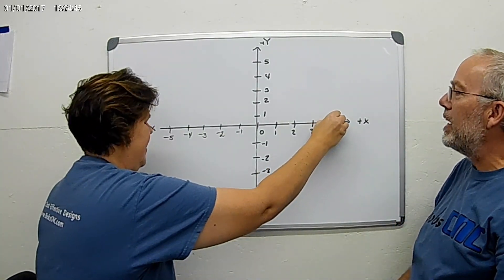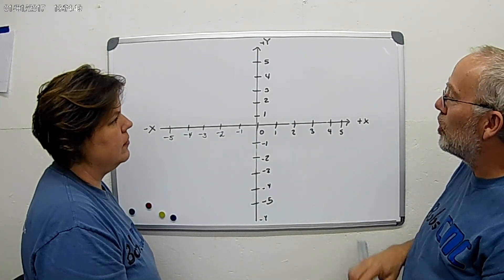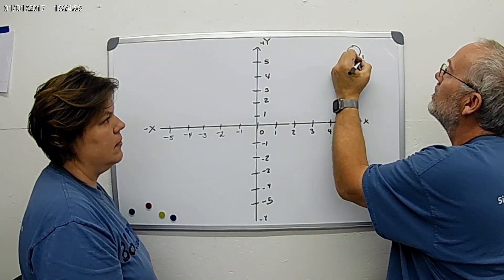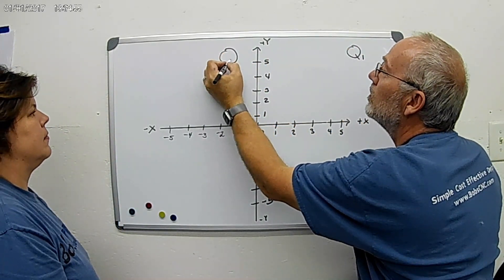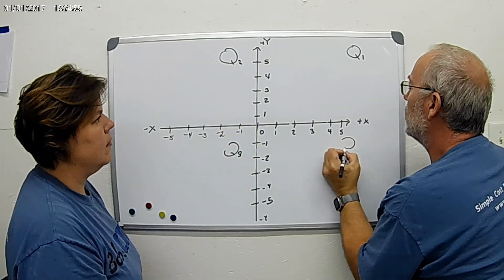Now before we get started, I want to just cover something else. These are called quadrants. Quadrant one is here, quadrant two is here, quadrant three, and quadrant four.